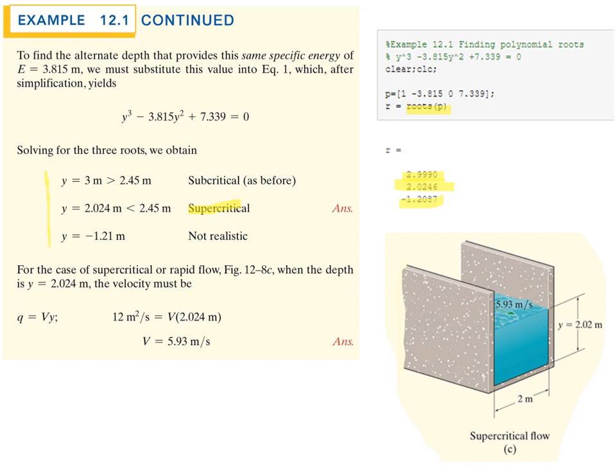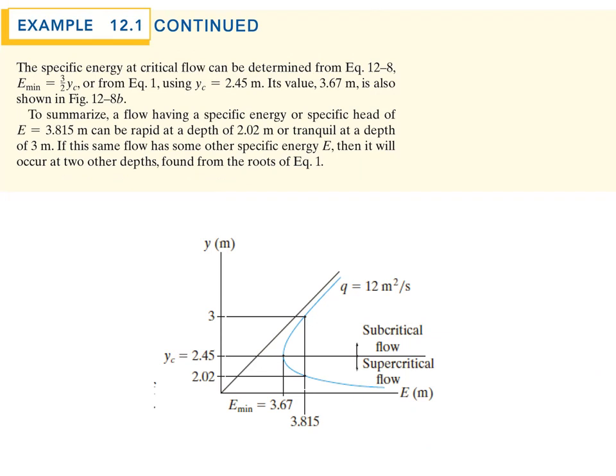Solving for the velocity at the alternate depth of 2.02 meters: since q remains the same, V = q/Y = 5.93 meters per second. This can also be solved on a calculator using its cubic root solver or plotting capability. The summary graph shows the starting depth of 3 meters, the calculated energy, the alternate depth, and the critical depth on the specific energy curve.